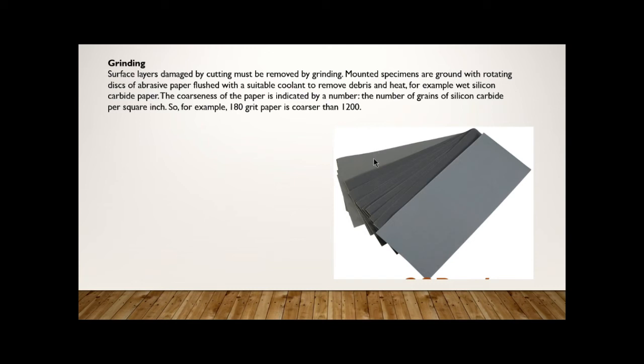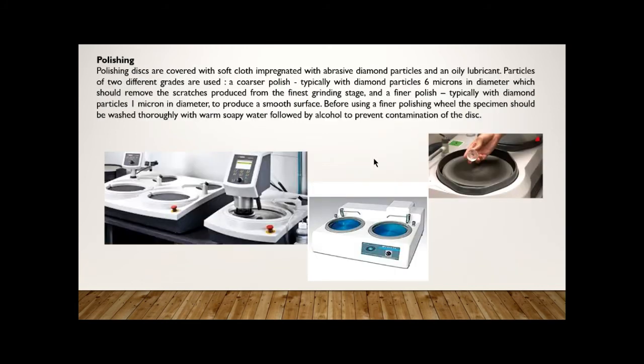After the grinding process, we should go for polishing. This is called a disc polishing machine. Most of the metallography laboratories are using this one. This is an automatic one. Here two discs are available. Depending upon the process, you can vary the speed. If you want, you can use water.